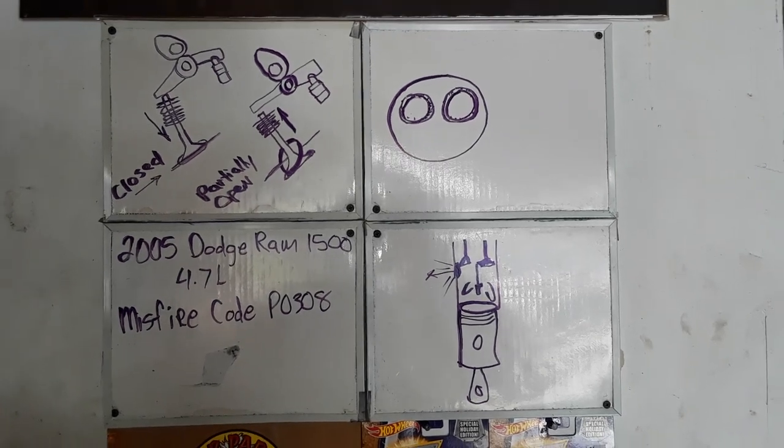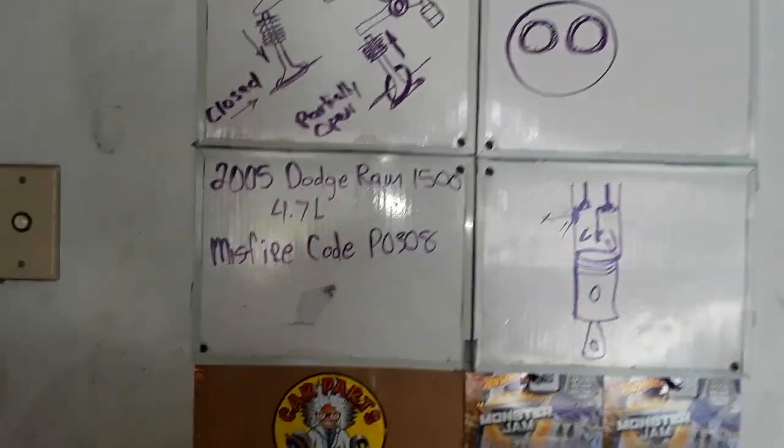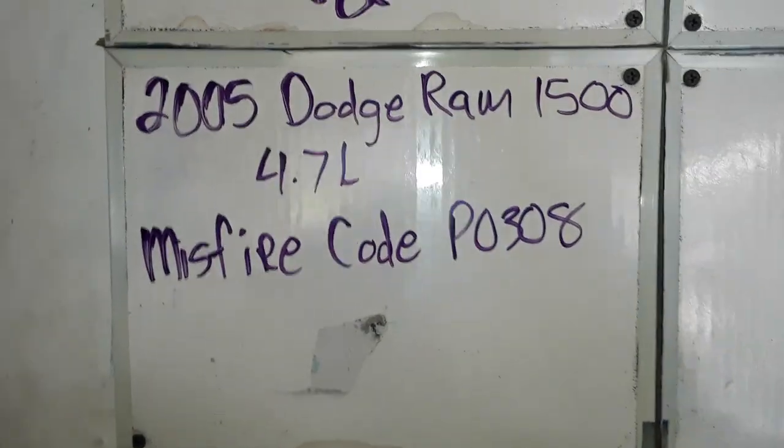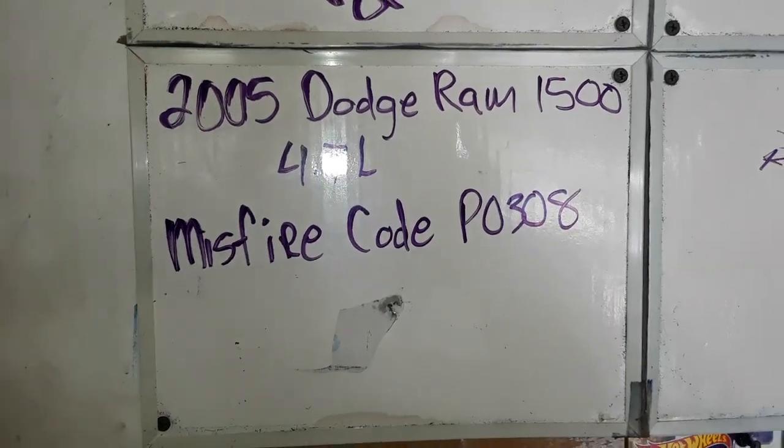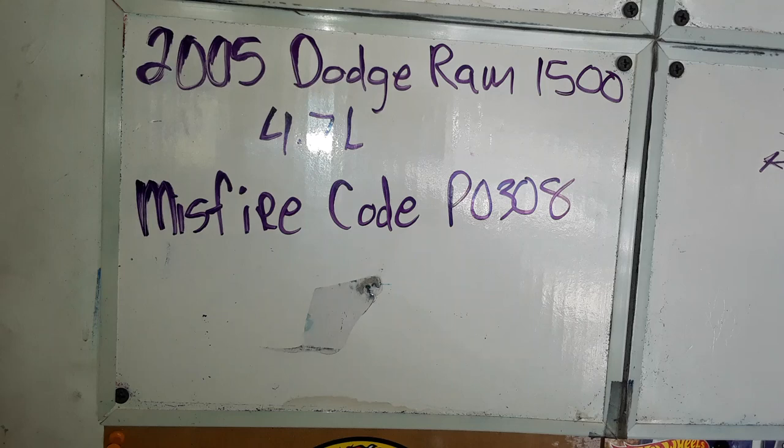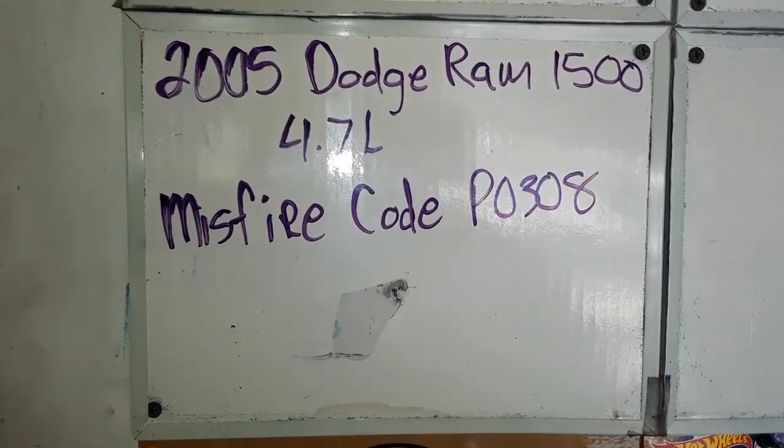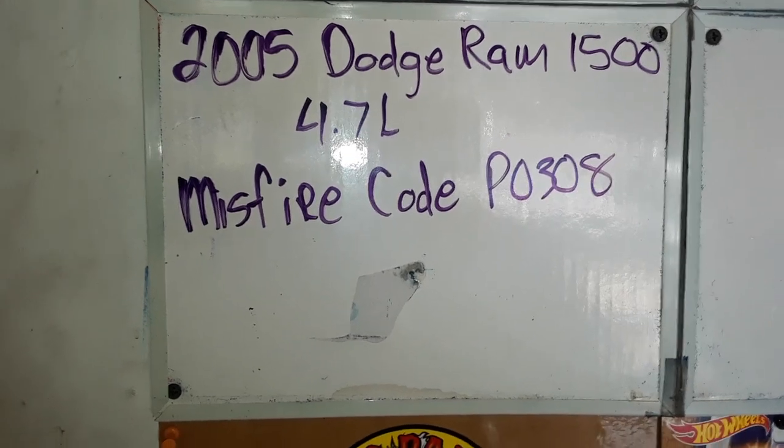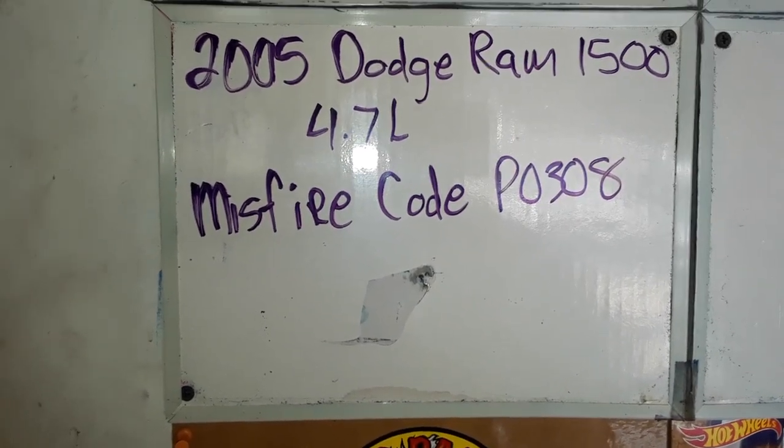This is a lesson on the mystery misfire. We are working on a 2005 Dodge Ram 1500 4.7 liter with a misfire code P0308. First, we swapped the coils from number eight to number two and deleted the codes. The misfire returned in the exact same position, so we knew it wasn't an ignition coil problem.